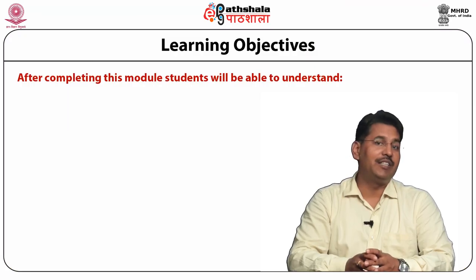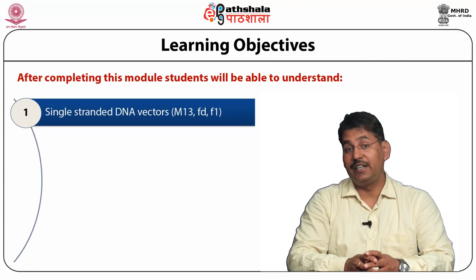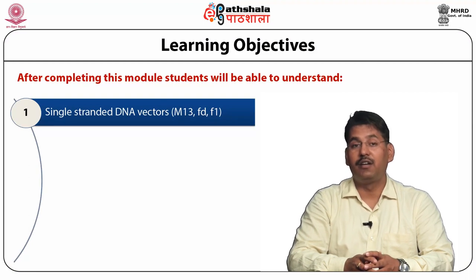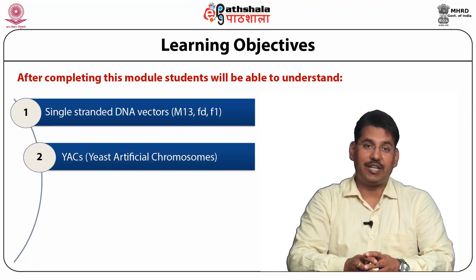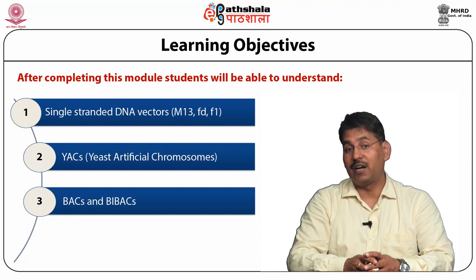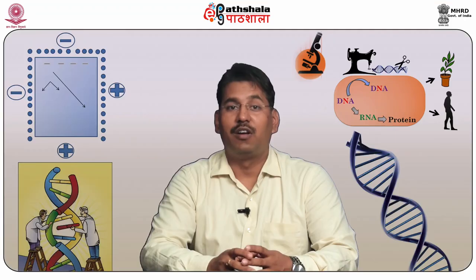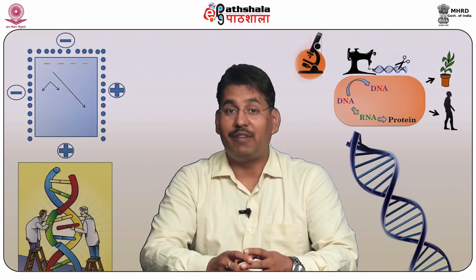After completing this module, you should be able to understand single-stranded DNA vectors like M13, Fd and F1, Yeast Artificial Chromosomes, Bacterial Artificial Chromosomes, Binary Bacterial Artificial Chromosomes, P1-Derived Artificial Chromosomes, and Phasmid Vectors.